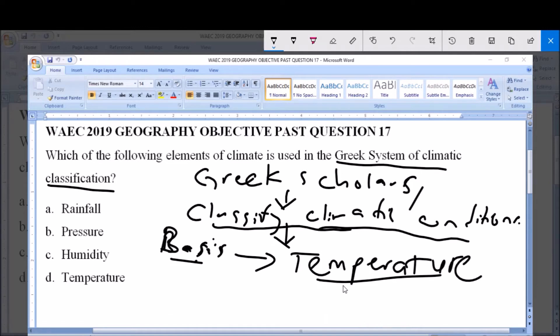And they did this by bringing together climates with similar attributes, with similar attributes based on temperature.